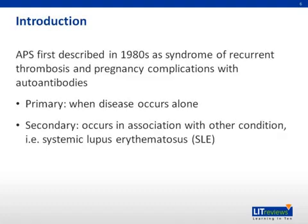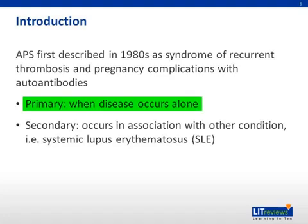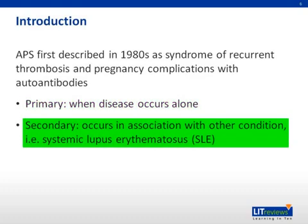The term antiphospholipid antibody syndrome, APS, was coined in the early 1980s and described patients with recurrent thrombosis and pregnancy complications such as miscarriages, fetal death, and premature births, and association with detectable autoantibodies directed against phospholipid binding proteins that interfere with coagulation. Antiphospholipid antibodies act as inhibitors binding to phospholipid portions of clotting factors and slow down the coagulation cascade. APS can be primary, meaning the disease occurs without an associated autoimmune disease. In contrast, secondary APS occurs in association with another disorder, most commonly systemic lupus erythematosus.